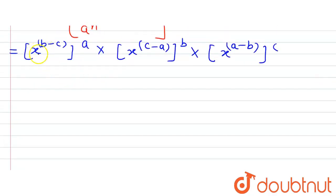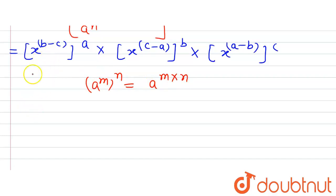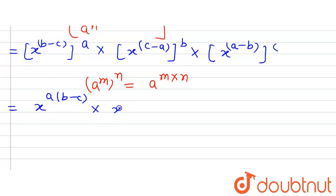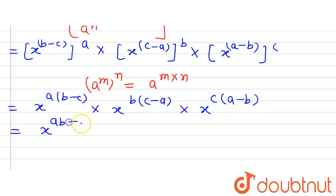Now we simplify further. We know that when a^m is raised to the power n, we can write it as a^(m×n). Using this rule: a is x, m is (b−c), and n is a, so we get x^(a(b−c)). Similarly, the second term becomes x^(b(c−a)) and the third term becomes x^(c(a−b)).